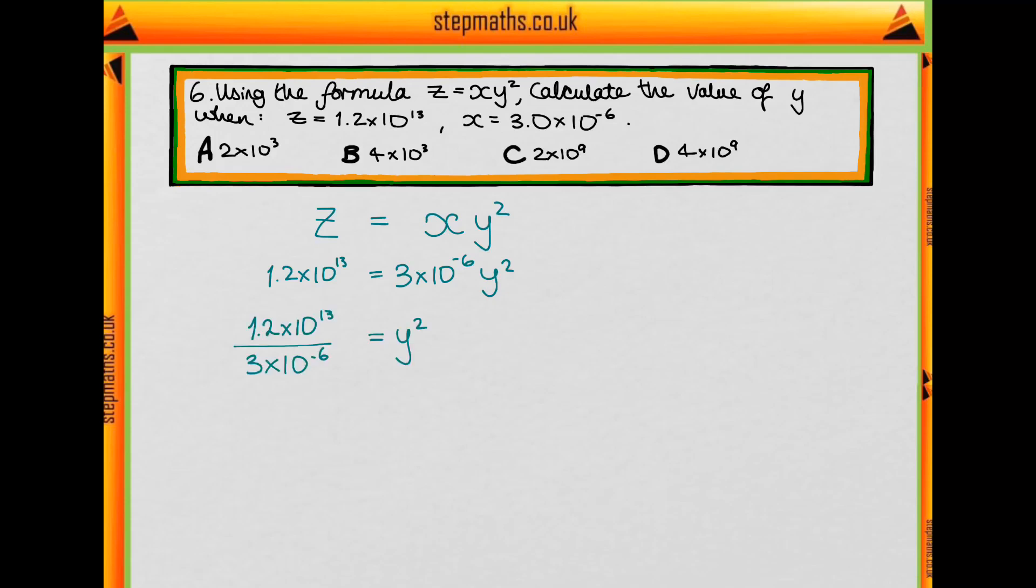Okay, so you can divide by the 3 times 10 to the minus 6, and now we can simplify this down further, because we know that when we have powers like this where we're dividing, we subtract them.